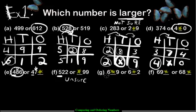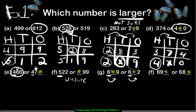What about this one? We have six hundreds and six hundreds — it's a tie. So we check next door. We have a star here and a star here. Does that mean it's a tie? No, it doesn't — we don't know what these numbers are, they're covered up. We can't go to the ones unless we're sure it's a tie in the tens. So again, we're unsure.